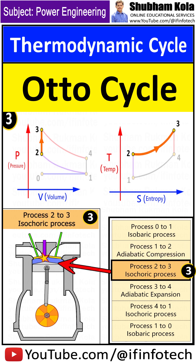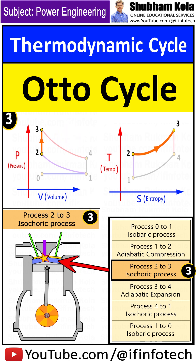Process 2 to 3 is an isochoric process where combustion occurs due to ignition of the fuel by the spark plug at constant volume. The combustion of the gas is complete at point 3, which results in a highly pressurized chamber that has lots of thermal energy.